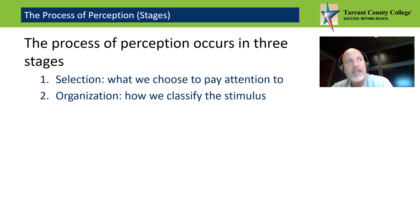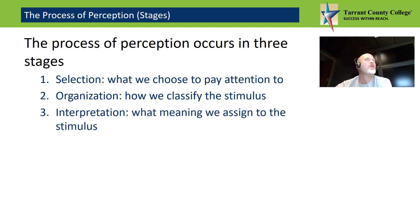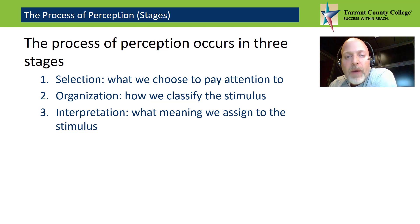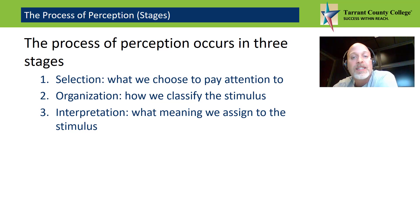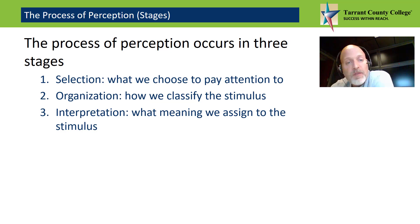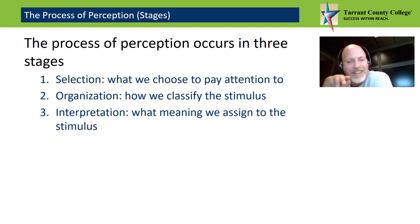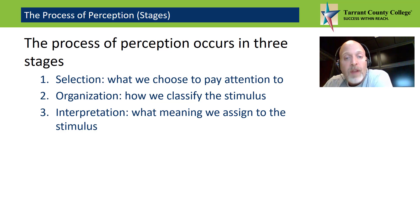Next is interpretation — what meaning we assign to the stimulus. After noticing and classifying the stimulus, you have to assign it an interpretation to figure out what it means to you. That doesn't necessarily mean the process is always linear. The three stages of perception — selecting, organizing, and interpreting information — do overlap. How we interpret a behavior depends on what we notice about it, but what we notice can also depend on the way we interpret it.